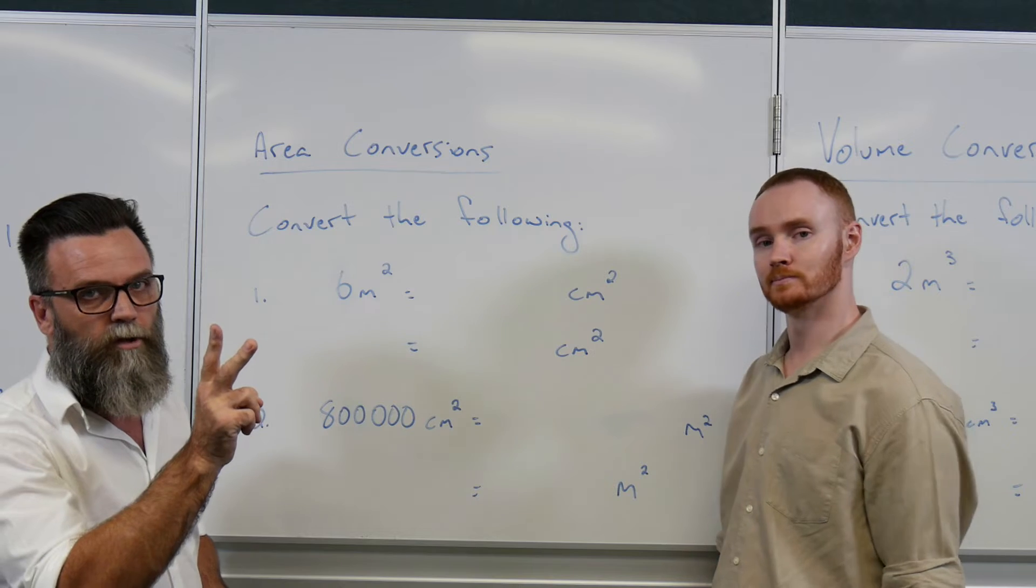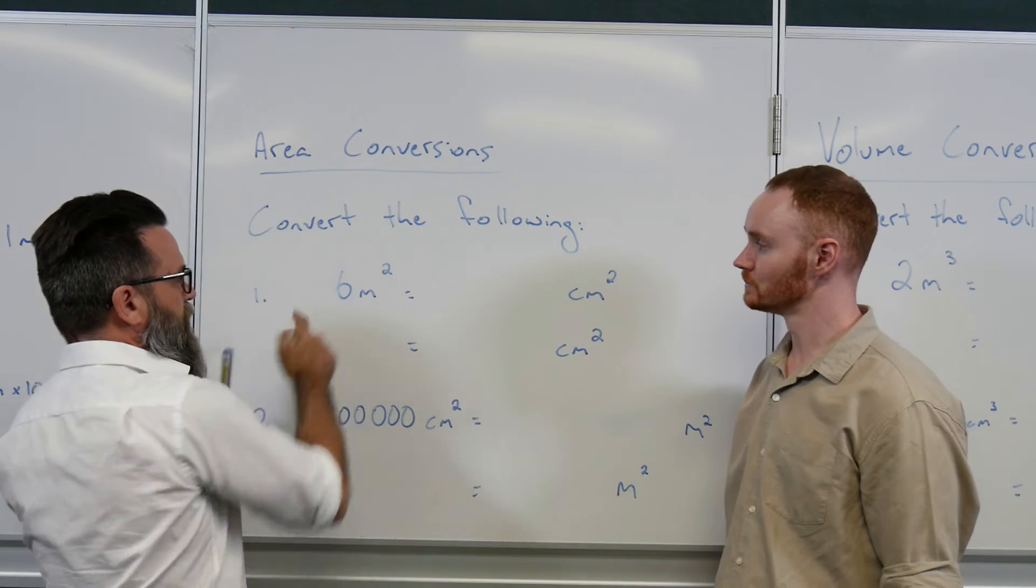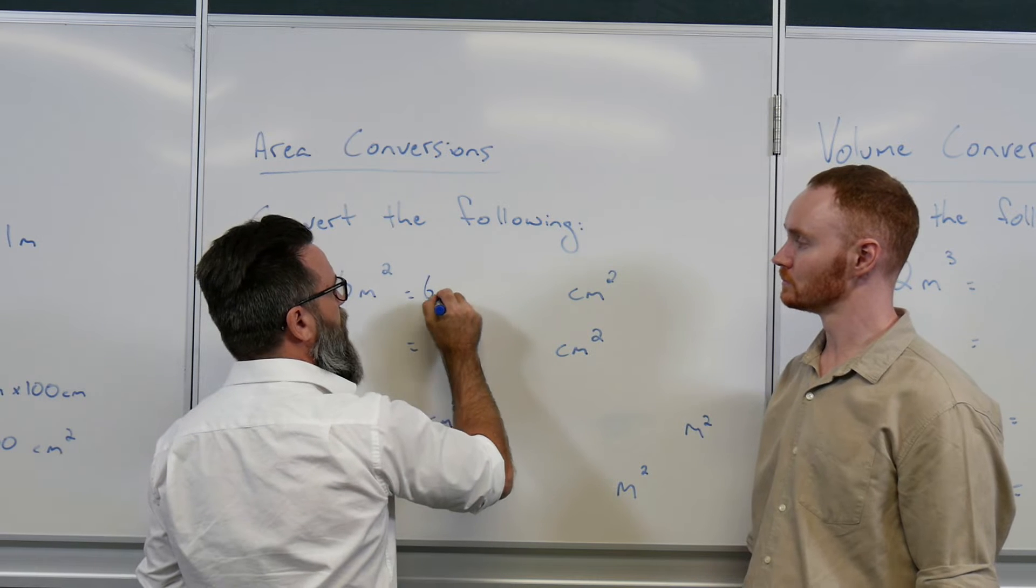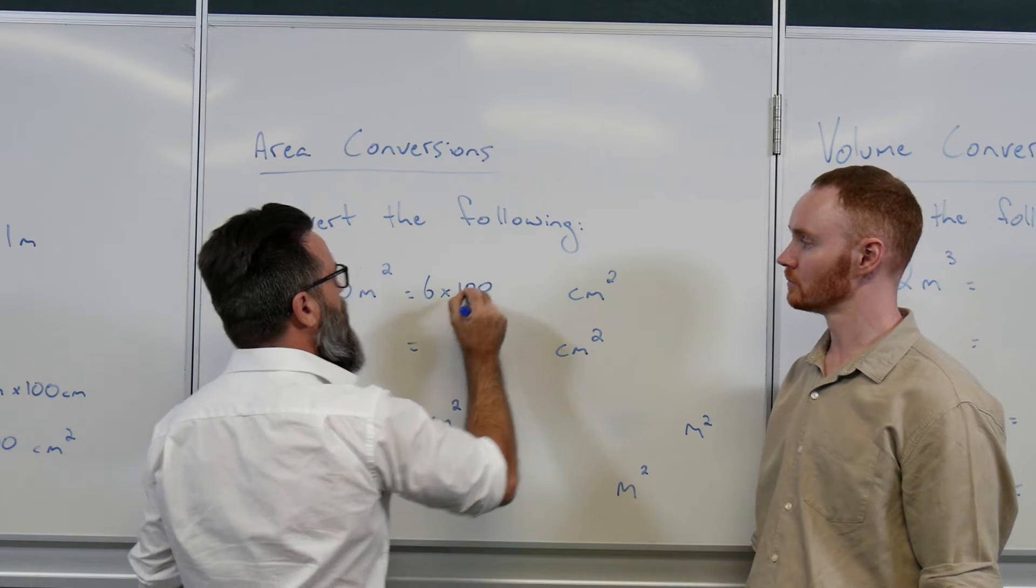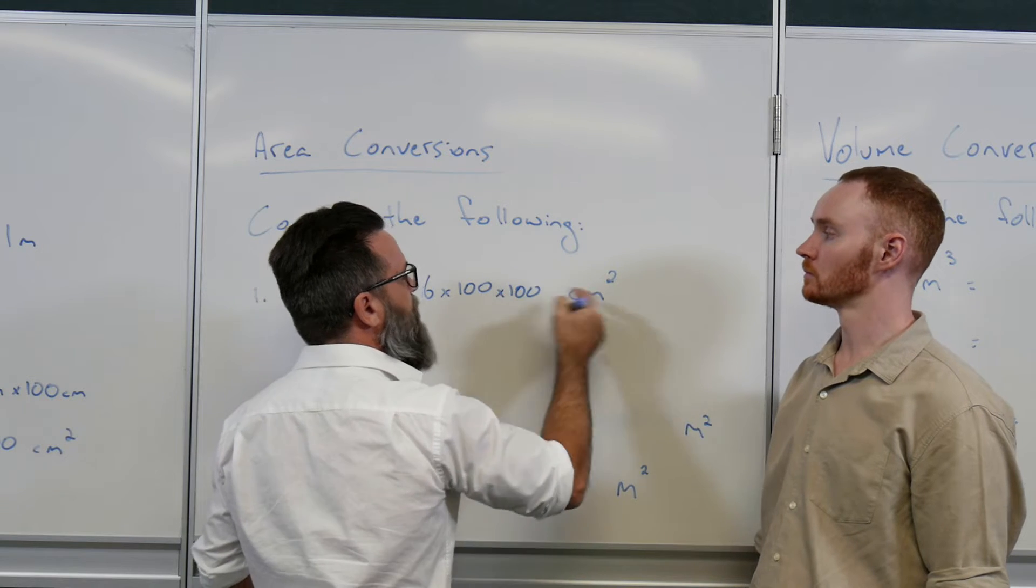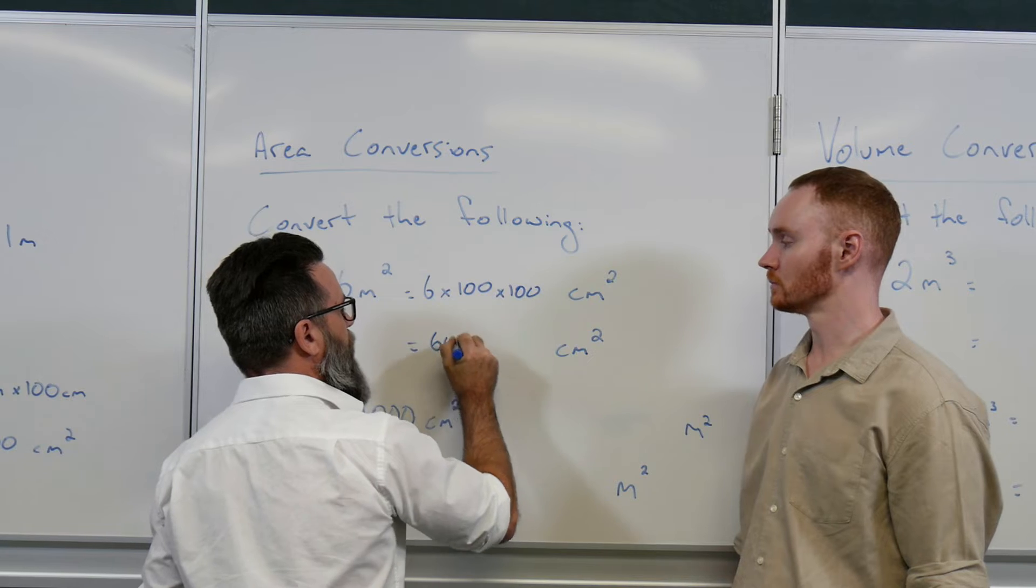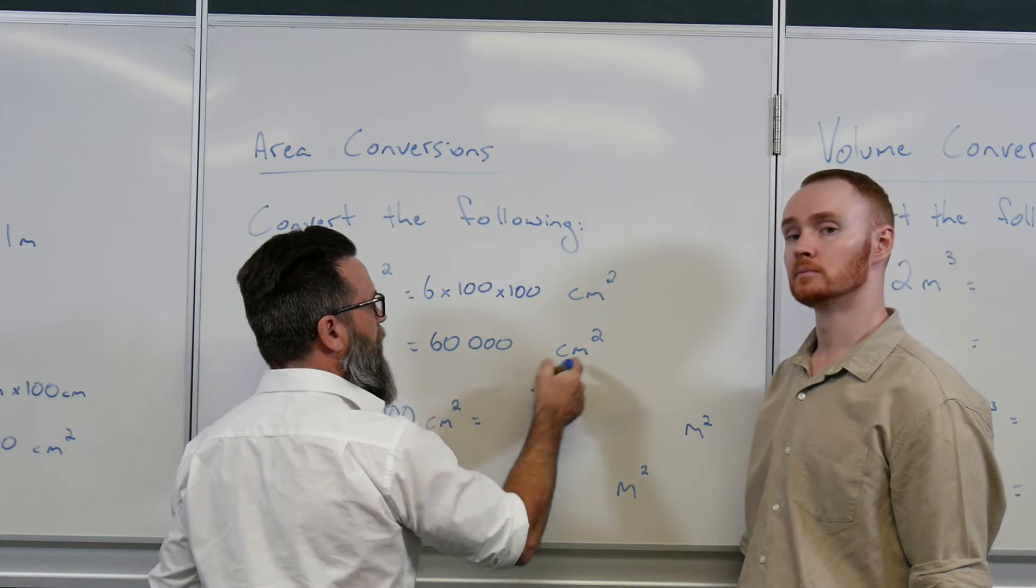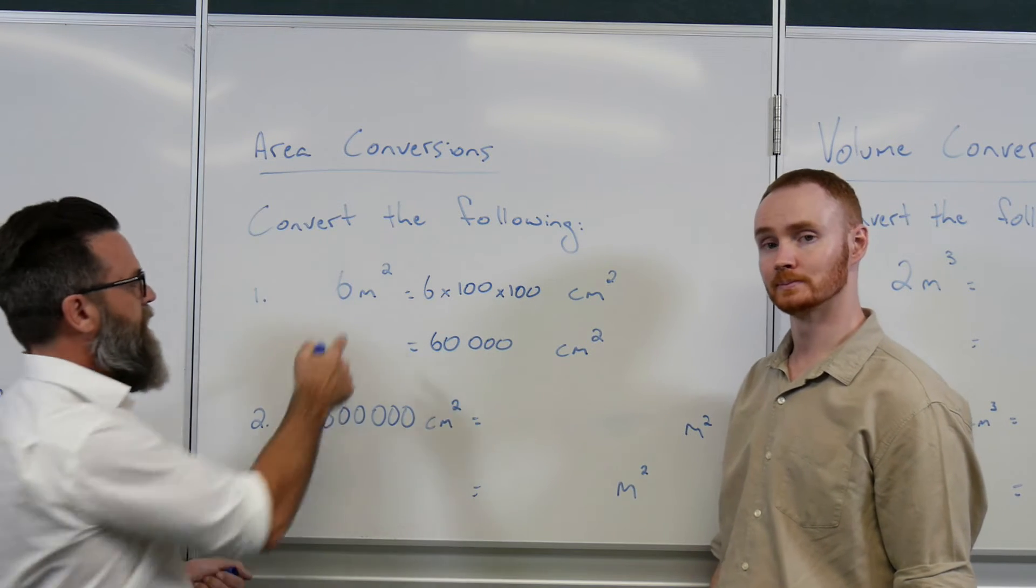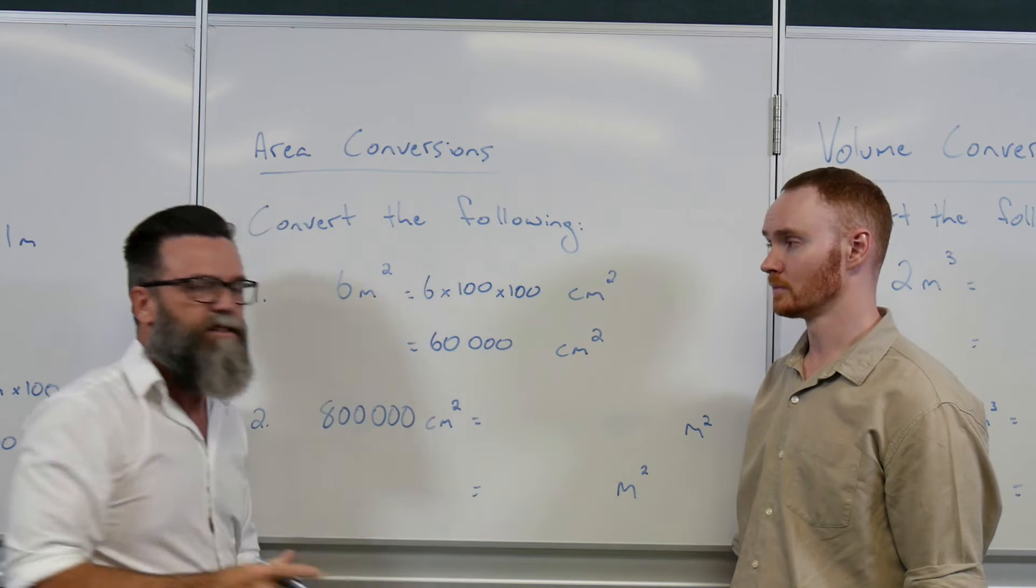So if I take that one meter squared, I multiply it by 100 and then I multiply it by 100 again, I get 10,000 and I'm now dealing with centimeters squared. All over it, Mr. Savage. Easy stuff. Okay, so Mr. Wilkie, what if we're dealing with numbers that aren't just one? I'm glad you asked because rarely we're actually dealing with numbers that are one.